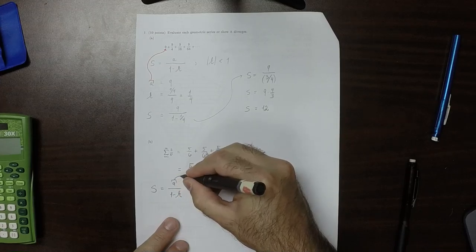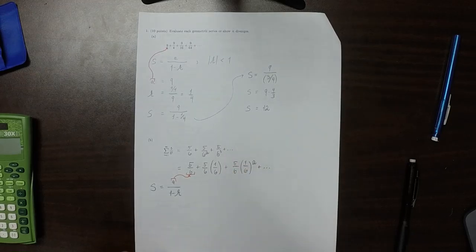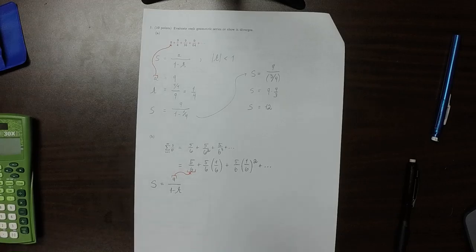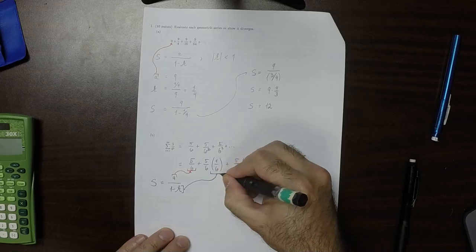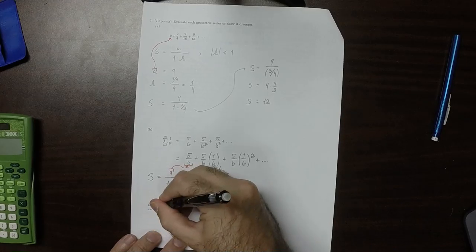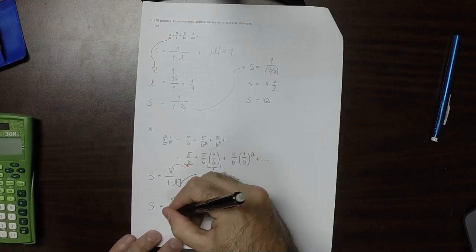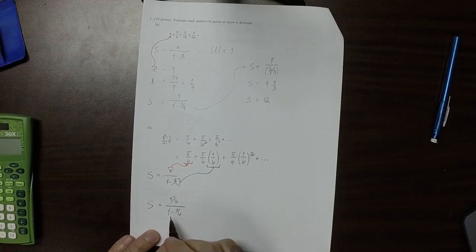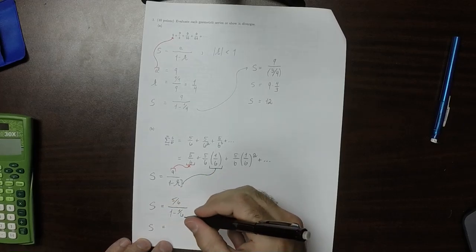So A is going to be 5 over 6, and R is 1 sixth. So the sum is just 1.